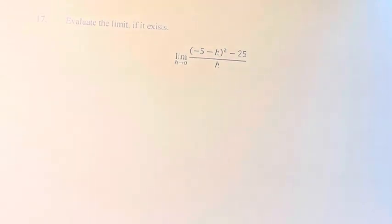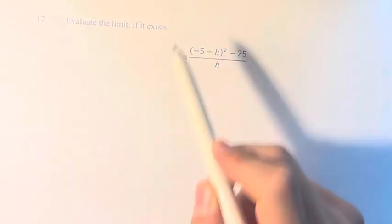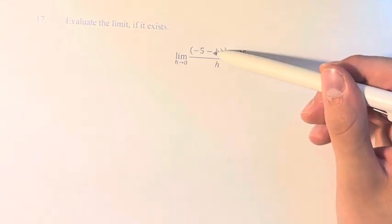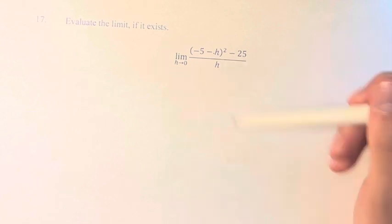Hello and welcome back to another video. In this problem we're asked to evaluate the limit if it exists. We have the limit as h approaches 0 of (-5 - h)² - 25 over h.